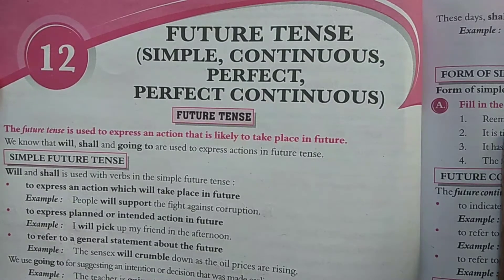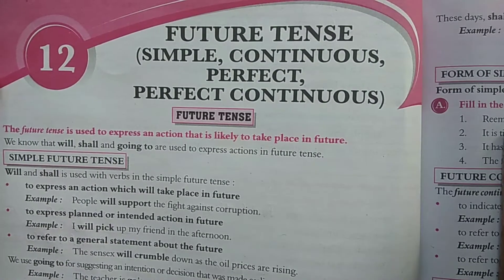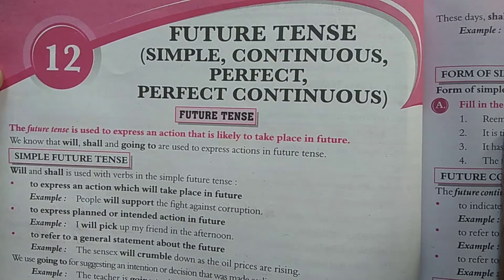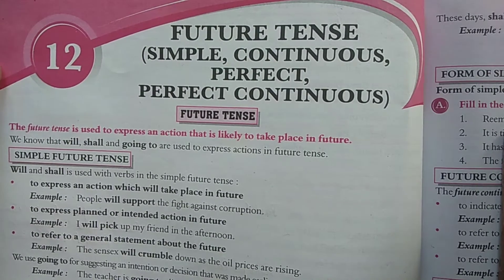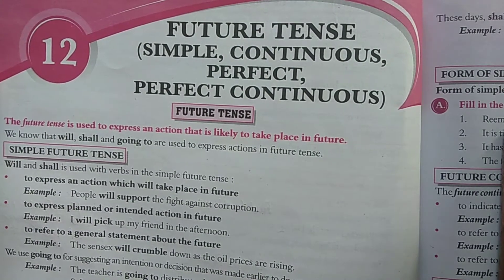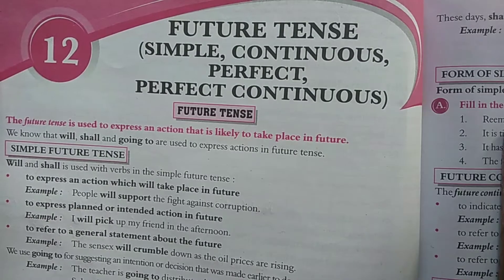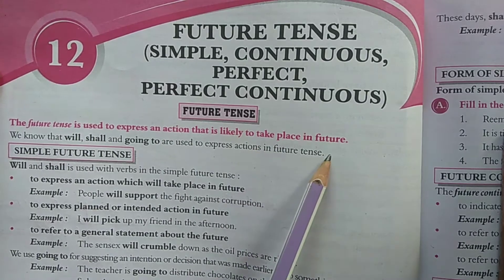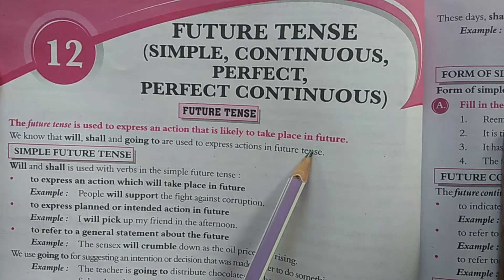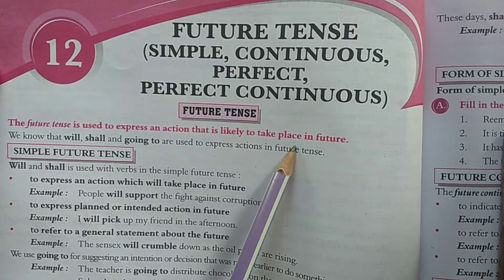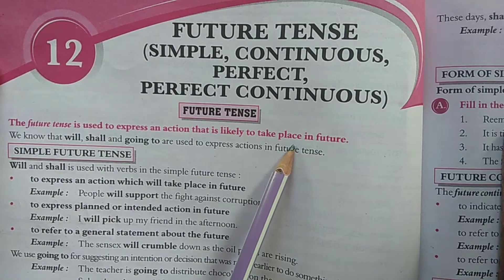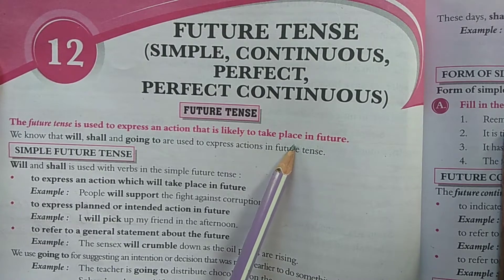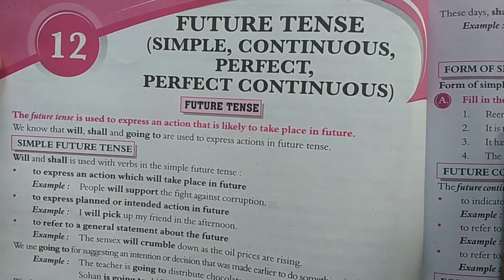We will discuss the future tense and its various forms: simple future tense, future continuous tense, future perfect tense, and the future perfect continuous tense. First, you need to understand the definition of the future tense. The future tense is used to express an action that is likely to take place in the future — actions which will take place after a few minutes or after a certain period of time.